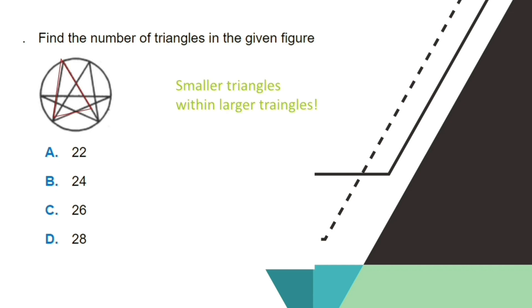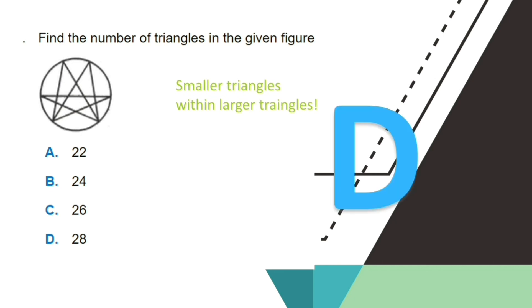Counting systematically from largest to smallest, we get a total of 28 triangles. So the answer must be letter D, 28.